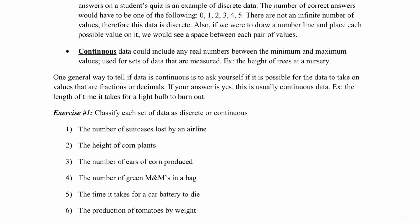Number three. The number of ears of corn produced. This is an example of discrete data because each ear of corn is distinct and separate.